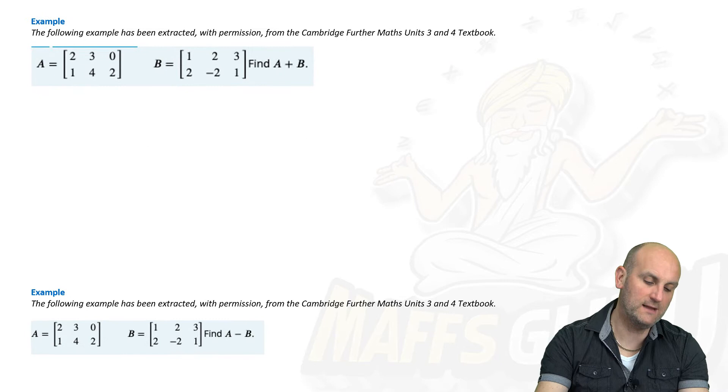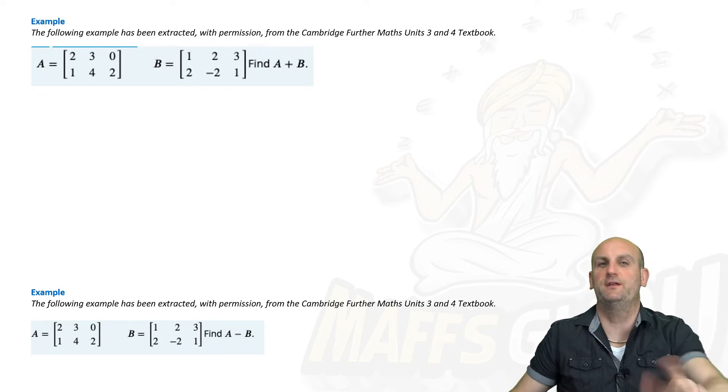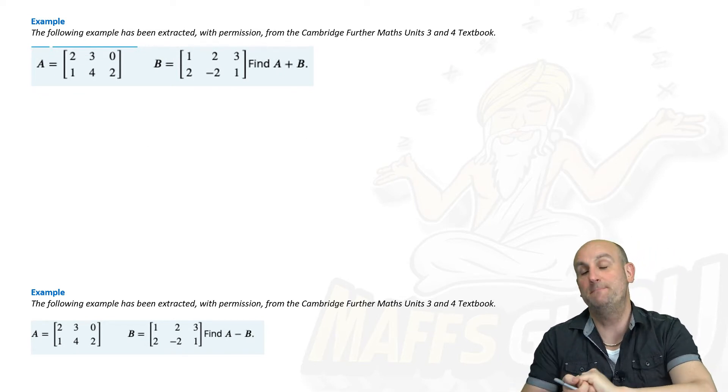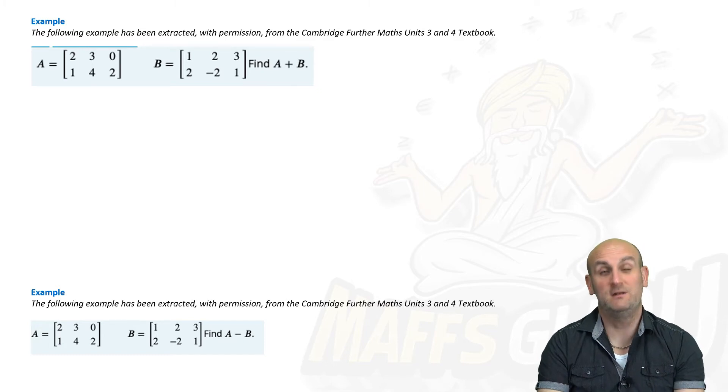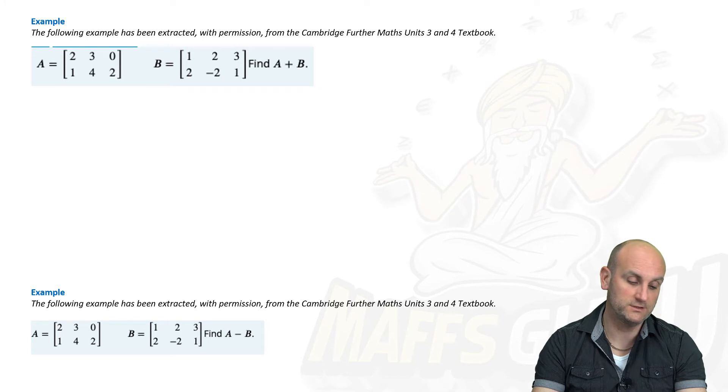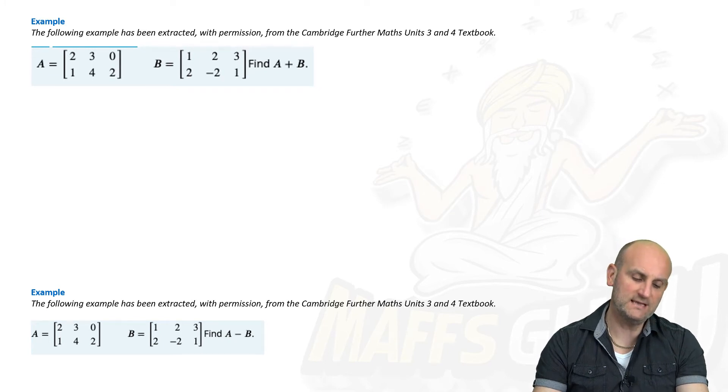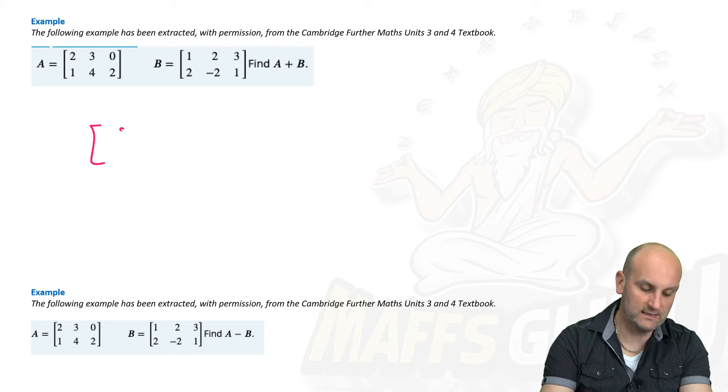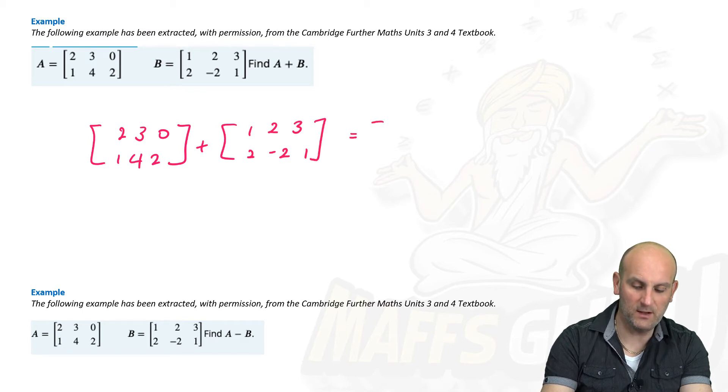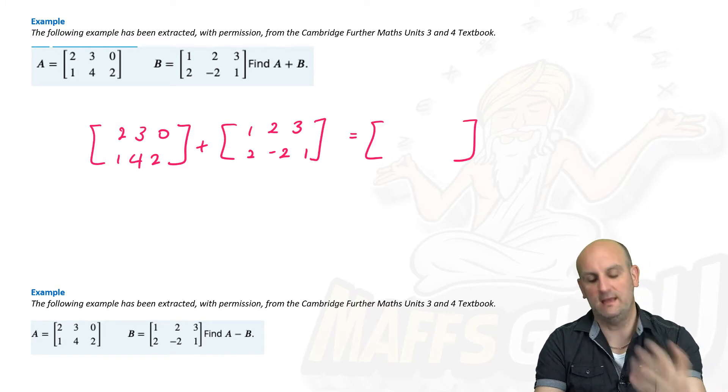Here's an example taken from the Cambridge Further Maths Unit 3 and 4 textbook. Thank you very much, Cambridge. You've given me permission to use your examples. And I am deeply grateful. Your textbooks absolutely rock with some phenomenal questions. The following example then says, find A plus B. Well, we can do that now.